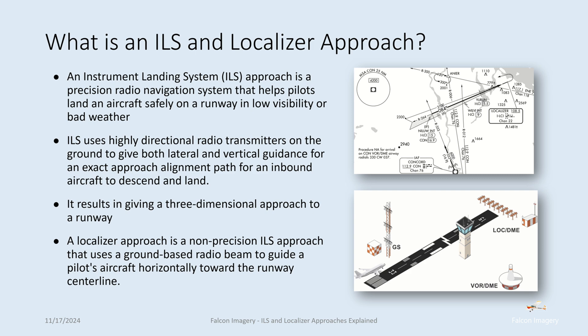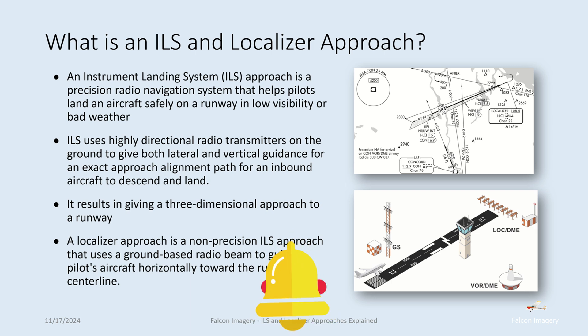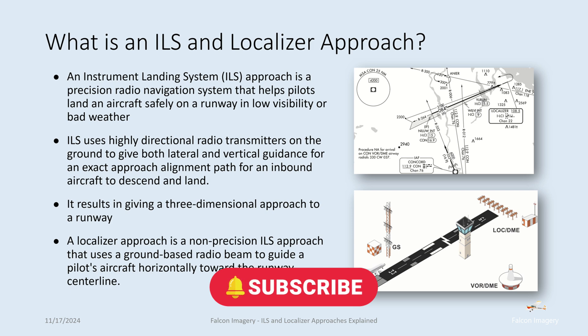A localizer approach is a non-precision ILS approach that uses a ground-based radio beam to guide a pilot's aircraft horizontally toward the runway centerline, but there's no vertical guidance provided — just lateral guidance.